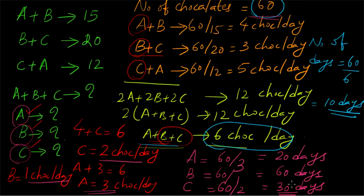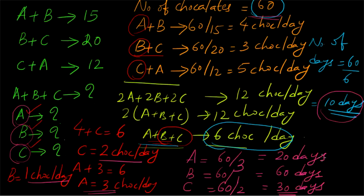So to summarize: when A, B and C work together, they take 10 days. When A works alone, he takes 20 days. When B works alone, he takes 60 days. And when C works alone, he takes 30 days. Thank you for watching.